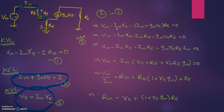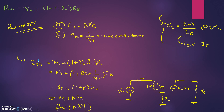Putting equation two into equation one: VIN minus IIN times Rpi minus (IIN plus Gm·Vpi) times RE equals zero. Rearranging and substituting Vpi equals IIN times Rpi, we get: VIN equals IIN times (Rpi plus RE plus Rpi·RE·Gm). Solving, VIN divided by IIN gives the input resistance: Rpi plus RE times (1 plus Rpi·Gm), which simplifies to Rpi plus (1 plus Rpi·Gm) times RE.